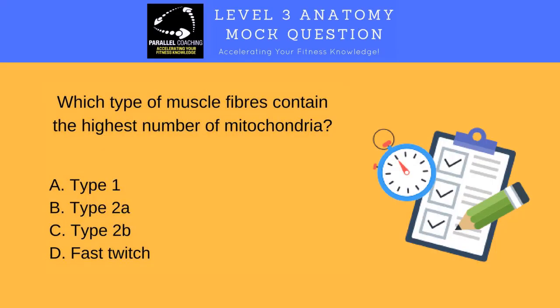Now you know everything you need to know about muscle fibre types, let's test your knowledge with this level 3 anatomy and physiology mock question. Click the link on the top right of this screen to vote for your answer. The question is: which type of muscle fibres contain the highest number of mitochondria? Is it A — type 1, B — type 2A, C — type 2B, or D — fast twitch? The answer is A, type 1 muscle fibres. Like we just went through on the table, type 1 muscle fibres are the oxidative ones that have the highest number of mitochondria because that's where the aerobic energy is created. Well done if you got that correct — if not, have a look back over the video. To download 100 more questions just like this one, hit the link with this video to access them straight away.